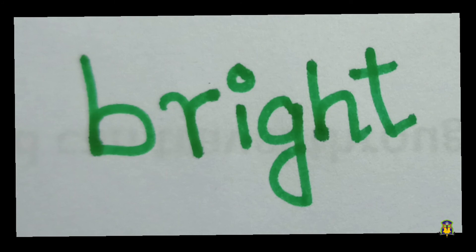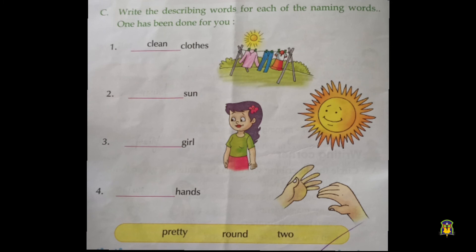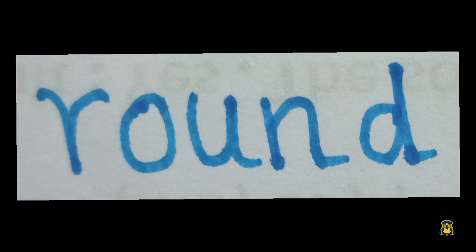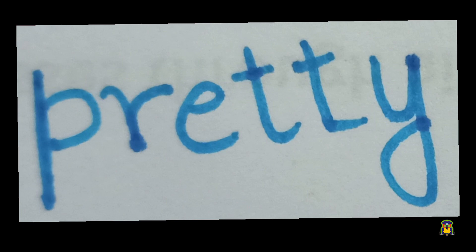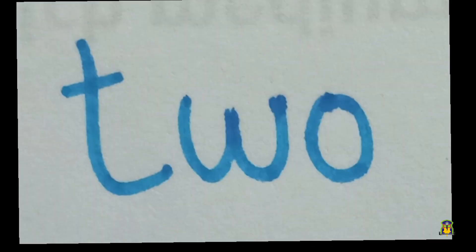Let's do the next activity: write the describing words for each of the naming words. One has been done for you. First one: clean clothes. Second one: round sun. Third one: pretty girl. Fourth one — look at the picture — two hands.